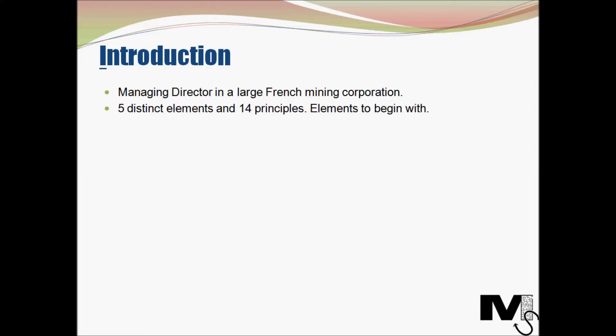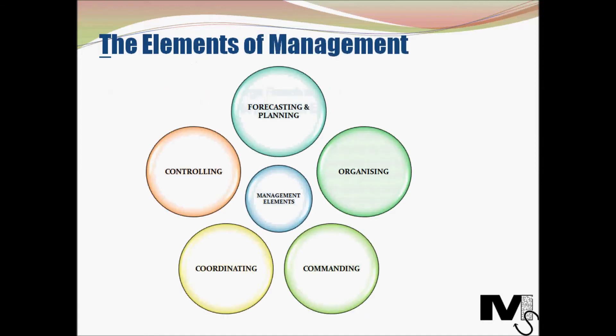He firstly broke management down into five distinct elements. The first element is forecasting and planning, which means looking into the future and drawing up action plans. The action plans drawn up should be flexible, accurate and as specific as possible. The next element is organizing, which means ensuring the material and human capacity requirements are met.